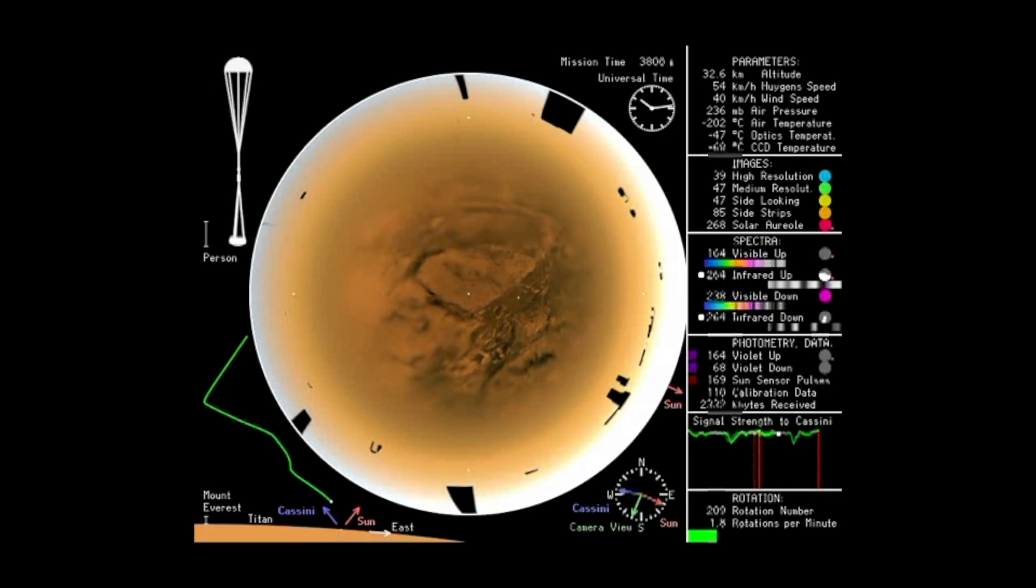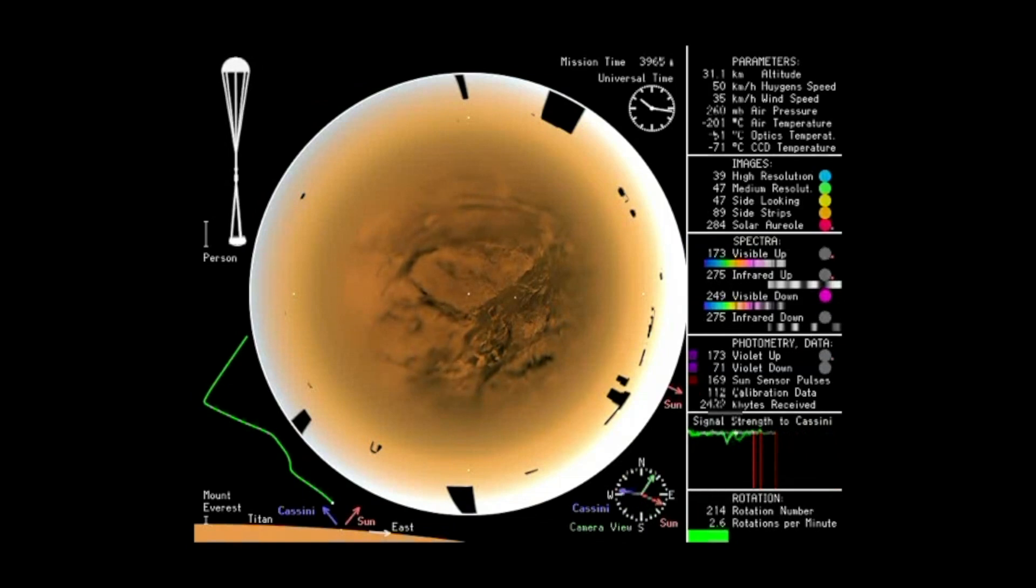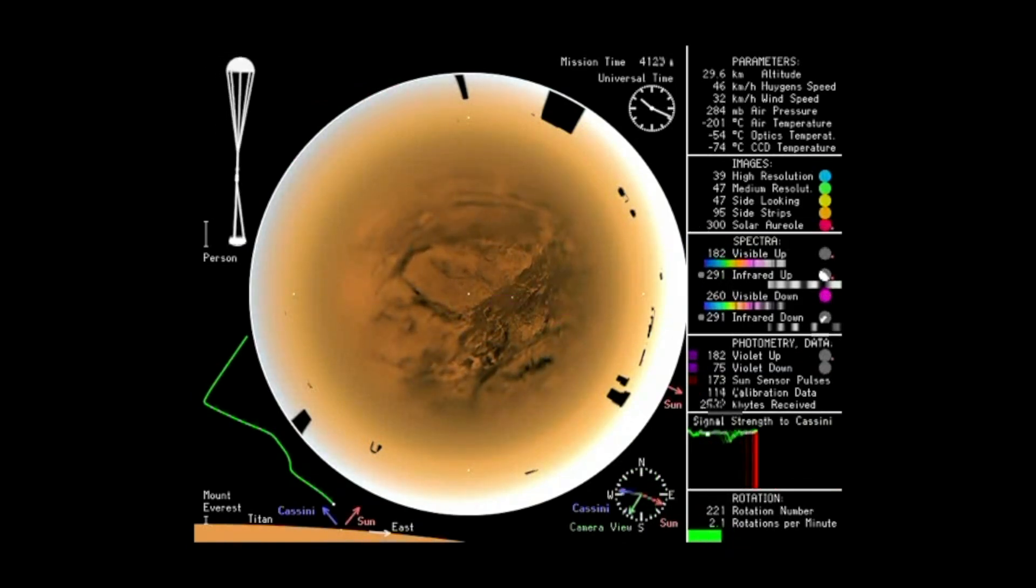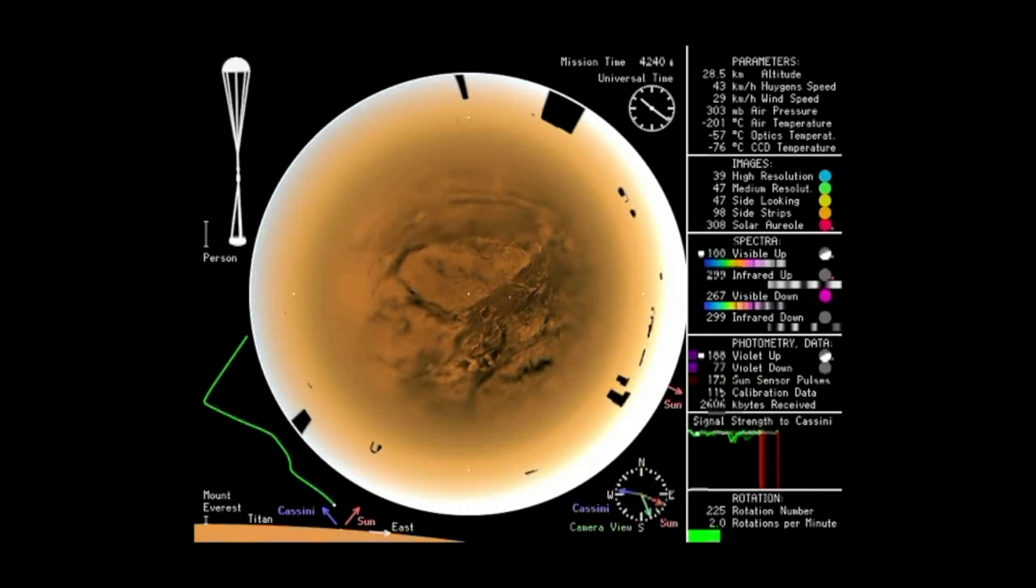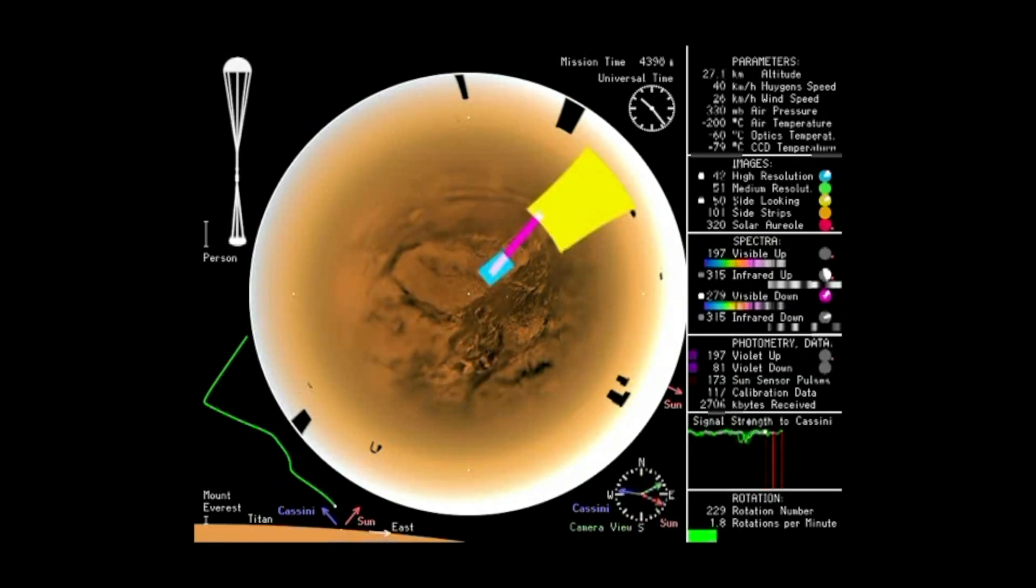Just an incredible, very interesting world. A prebiotic world, perhaps something like the early Earth might have looked like, only it's just very cold. Any water—the water ice on Titan forms sort of the bedrock or the rock on Titan. That was just an incredible set of findings by the Cassini spacecraft.